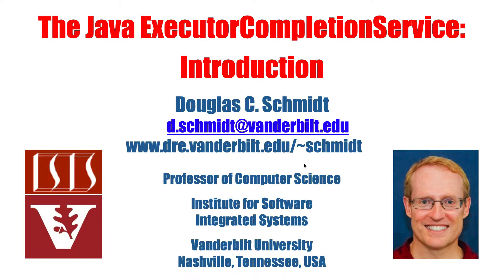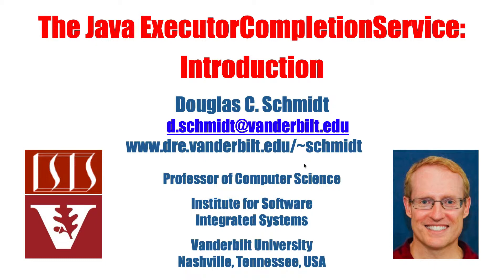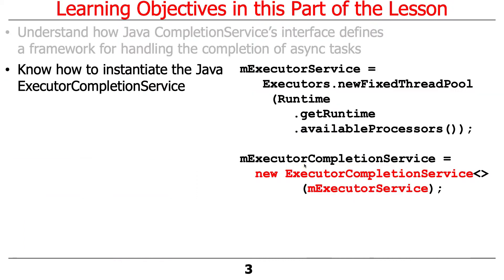We're going to talk about something called the Java Executor Completion Service. I'll explain the building blocks for the Executor Completion Service, which is the completion service interface, and how it works with a bunch of other interfaces and classes to provide a framework to handle the completion of asynchronous tasks in a very clever way. I'll also give you a simple example of how to instantiate an instance of the Executor Completion Service.